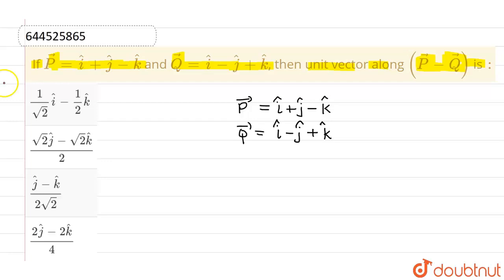Now for finding the unit vector in the direction of P vector minus Q vector, first I have to calculate P vector minus Q vector. So P vector is i cap plus j cap minus k cap, and Q vector is i cap minus j cap plus k cap.